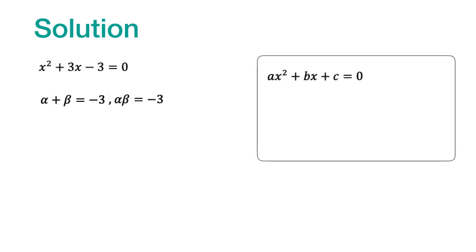In the quadratic equation ax squared plus bx plus c equals 0, the sum of the roots is given by minus b by a. The product of the roots is given by c by a. So we have used this fact over here.